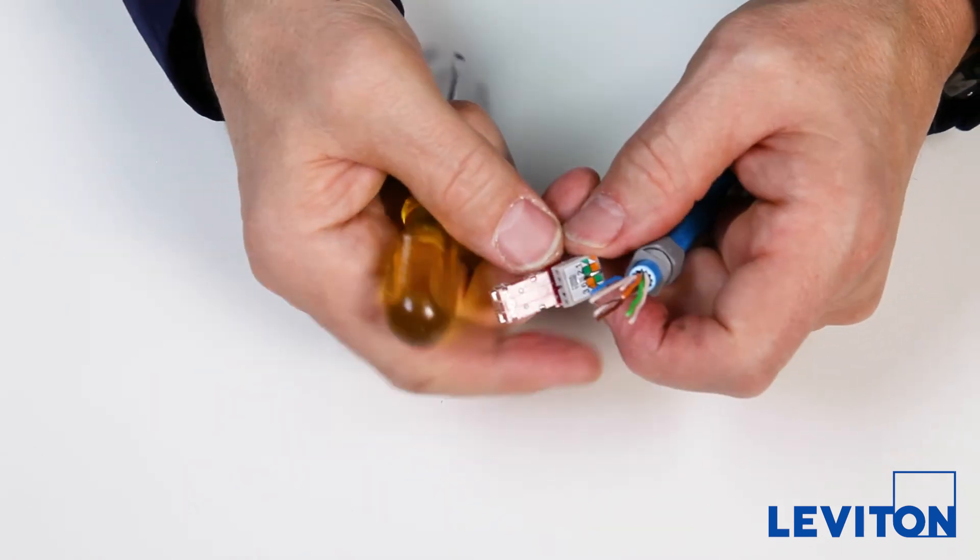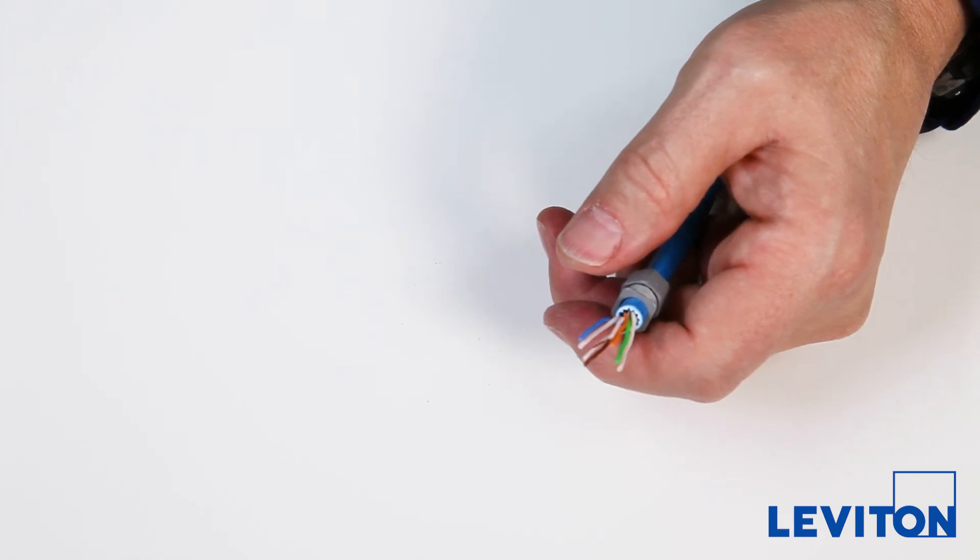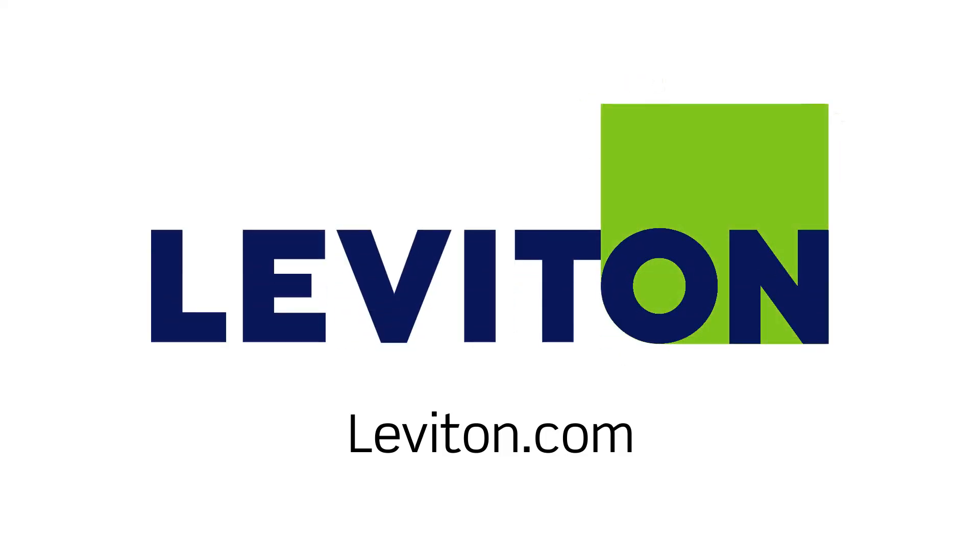Slide the wire manager off of the wires. The plug is now ready for re-termination. To learn how to terminate the CAT 6A tool-free plug on a shielded cable, an instructional video is available at Leviton.com.